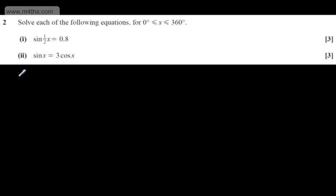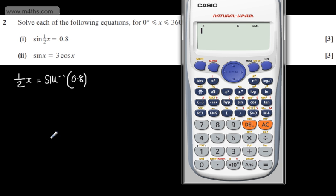The first thing I'm going to write is my principal value. 1/2 x will be equal to the inverse sine of 0.8. Checking my calculator is in degrees mode, shift mode 3, I'm going to take the inverse sine of 0.8.